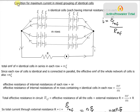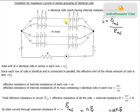In this video we will derive the condition for maximum current in mixed grouping of identical cells. Suppose you have n identical cells, each having internal resistance r, in each row. In one row you have n cells connected in series — all of them are identical, with the same EMF η and internal resistance r. You then replicate these rows m times.